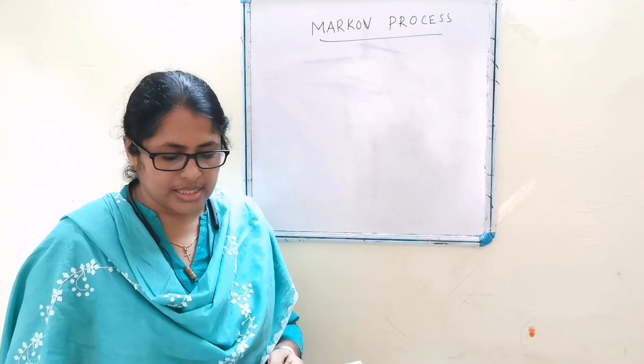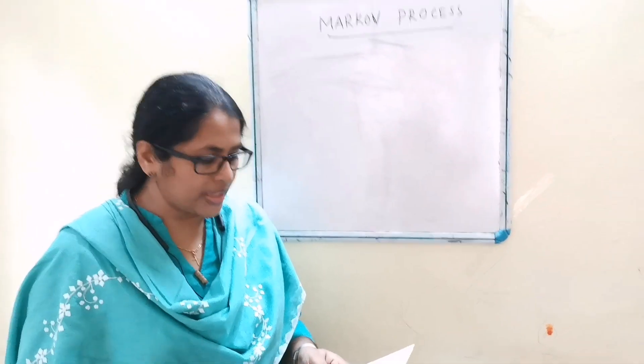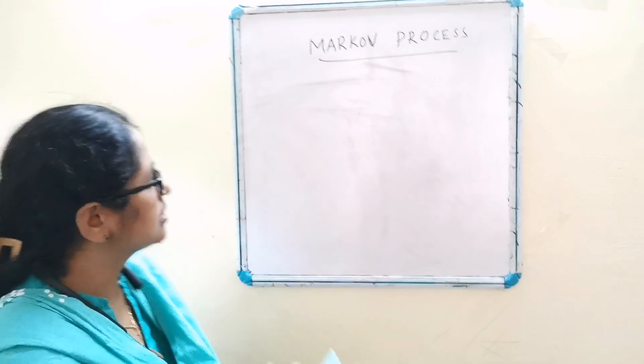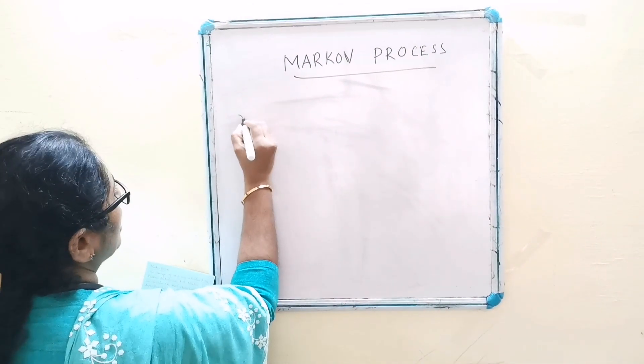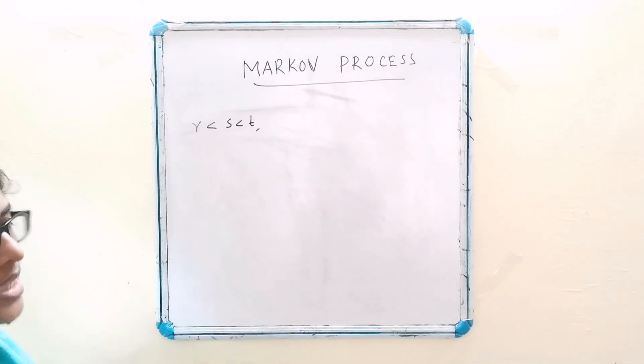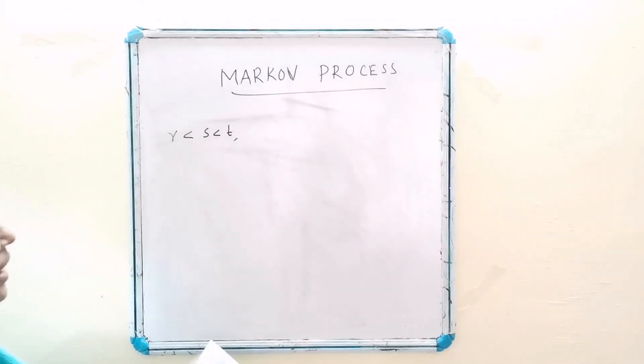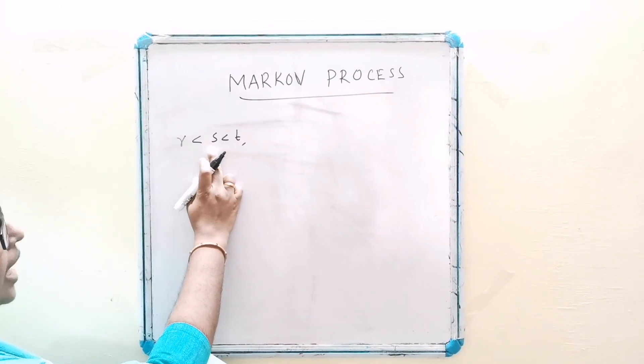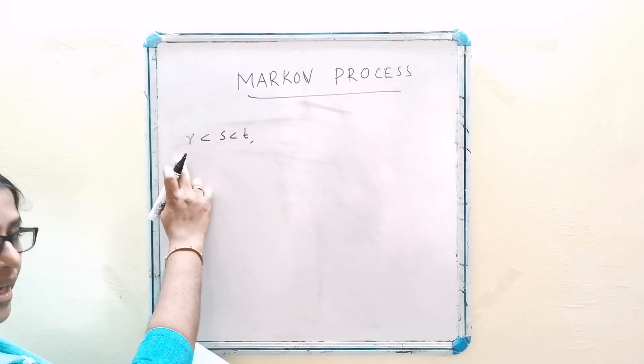This property states that given the values of the process at time points r and s such that r less than s less than t, the values of xt depends only on xs and are not influenced by xr.